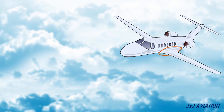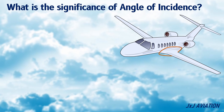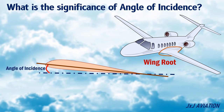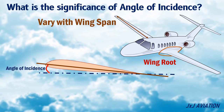What is the significance of the angle of incidence? The chord line at the wing root is used to determine the angle of incidence. This is because the chord line may vary with the wingspan. The angle of incidence is calculated based on optimum aerodynamic efficiency.